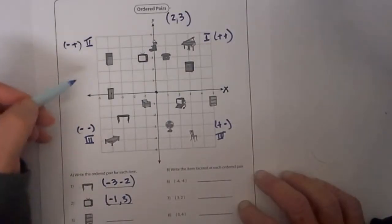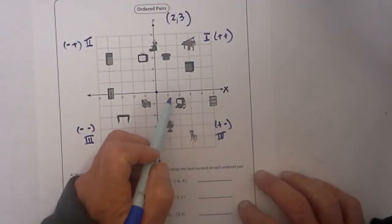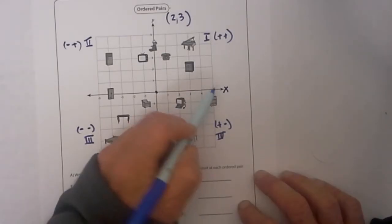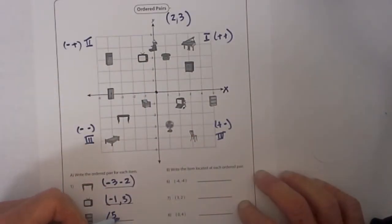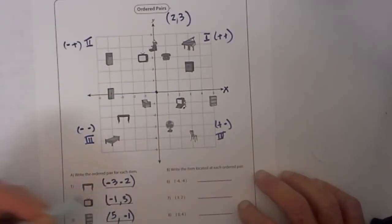Next we go with the bookshelf. On this particular one we go over 1, 2, 3, 4, 5. So 5 will be the x value and then we go down 1 so that will be negative 1.